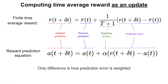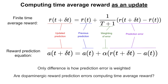The only difference is really in how the prediction error is weighted. This provokes the obvious question: are dopaminergic reward prediction errors computing a time average? Because if models of this sort are a good model of phasic dopamine, then maybe this model is also good — and if it is, it would indicate that it's the time average reward that's being calculated.